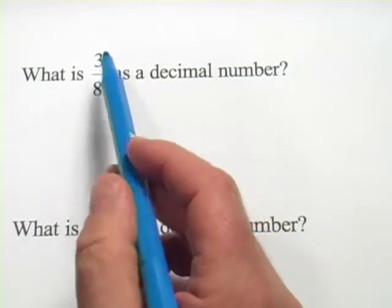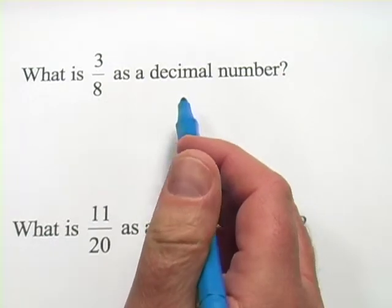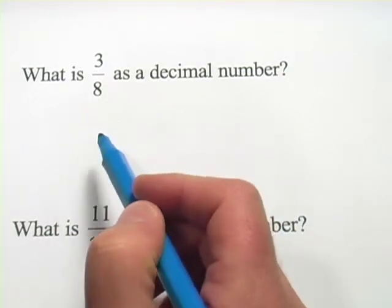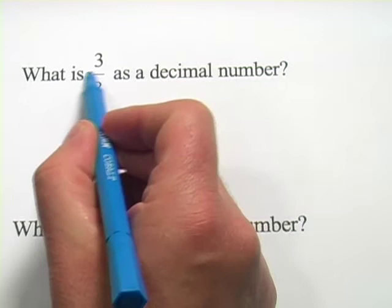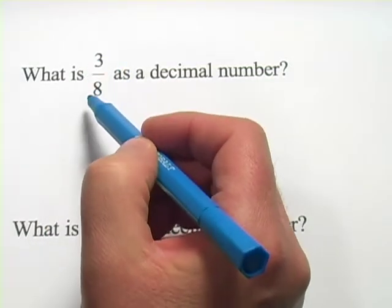In these problems, we're being asked to write fractions as decimals, so converting fractions into decimals. And really this is all about dividing. This line right here you can think of as divided by, so 3 eighths is the same as 3 divided by 8.